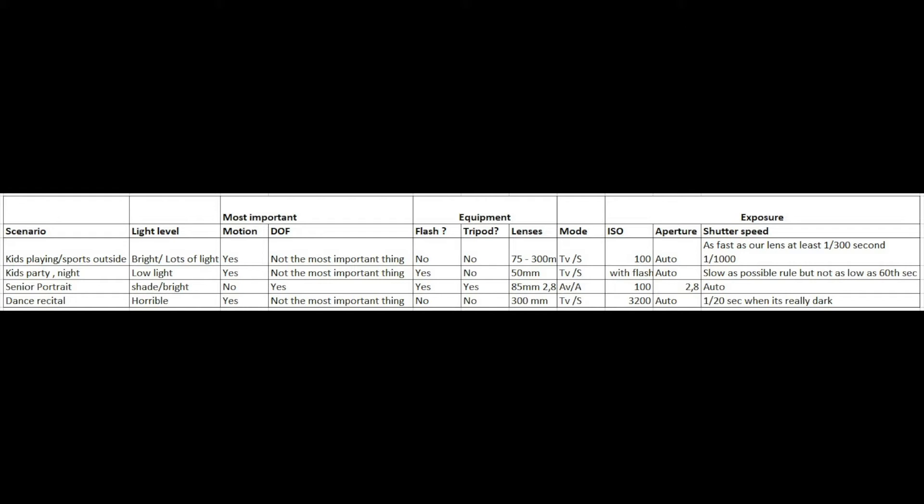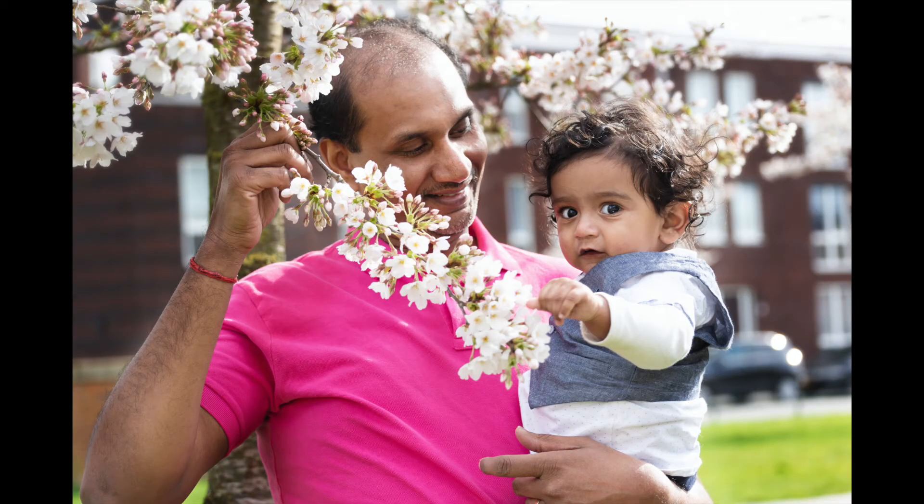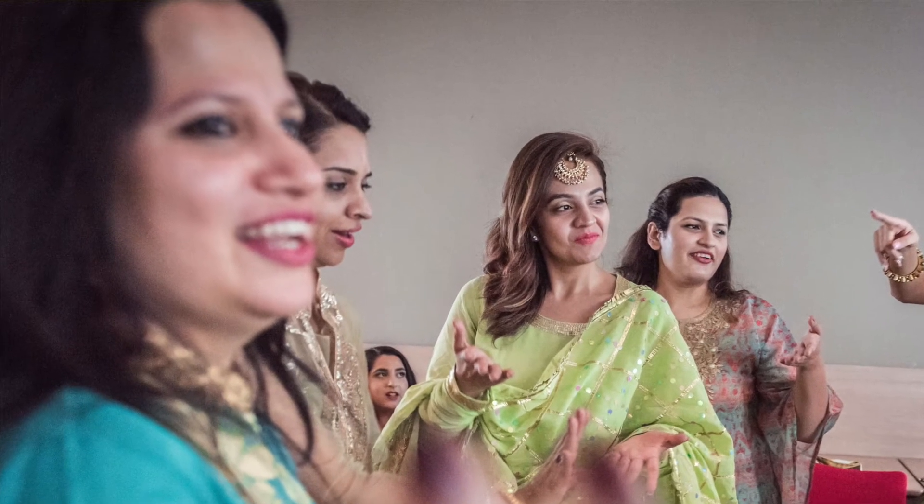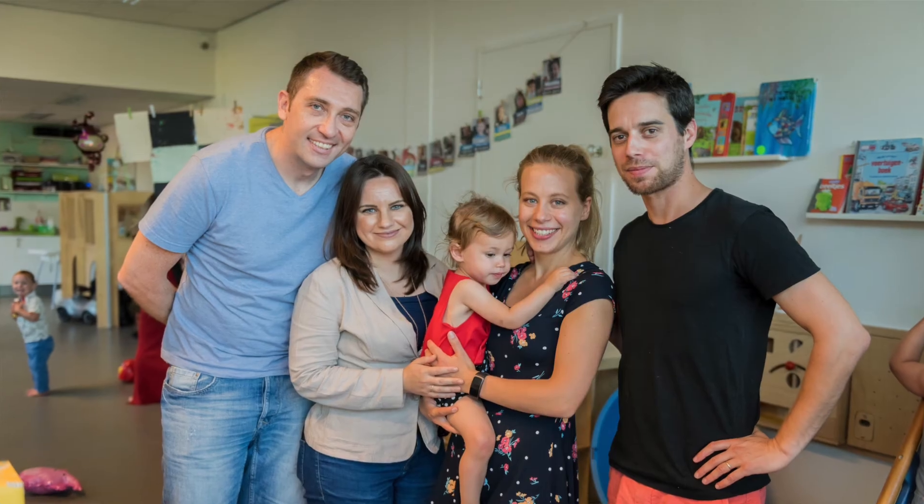I've actually made a cheat sheet for different situations. For example, a kid playing outdoors in a park on a sunny day — around ISO 100 is a very good setting. But if you're capturing a party inside a house or room where there's not very good daylight, then you would use around 3,000 or add an external flash to your camera.